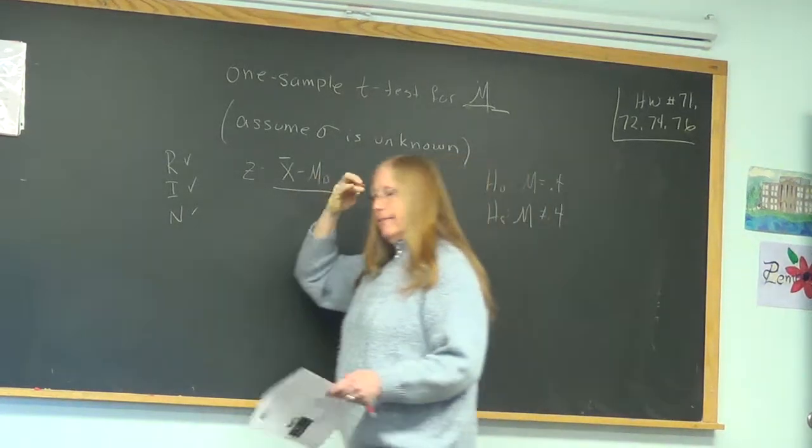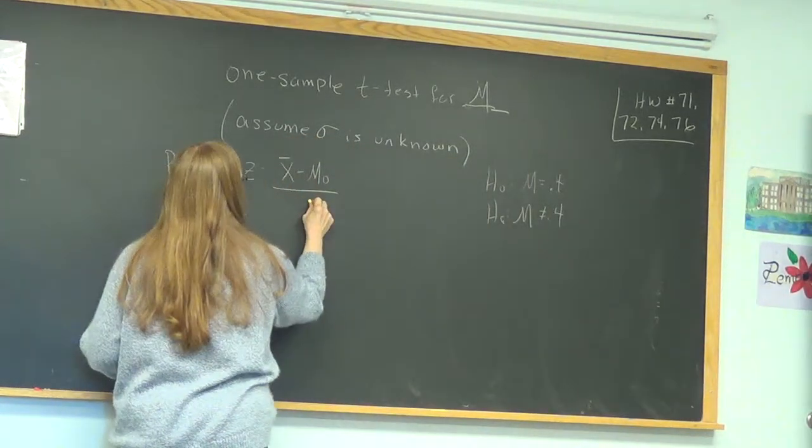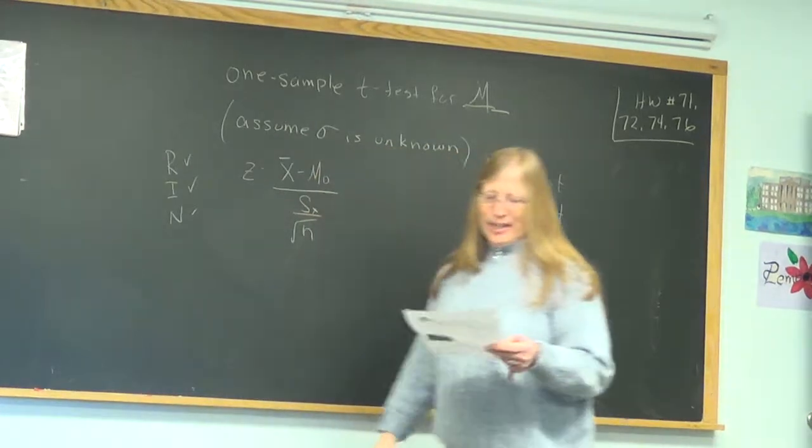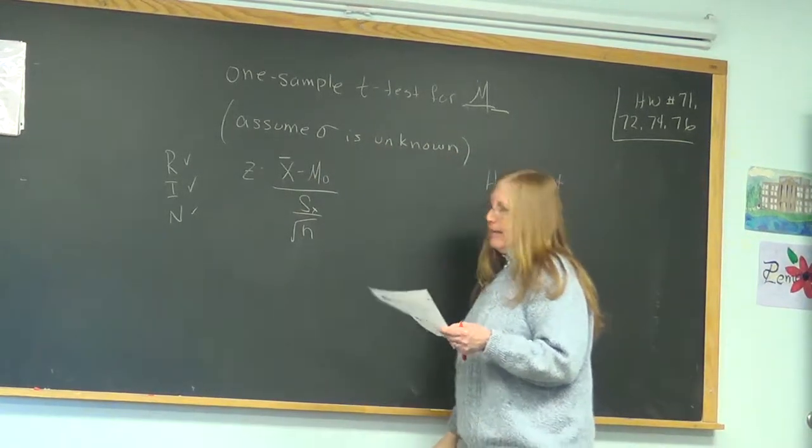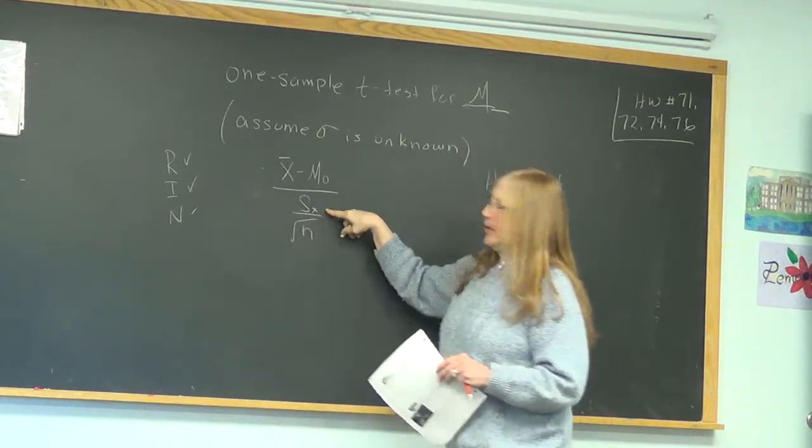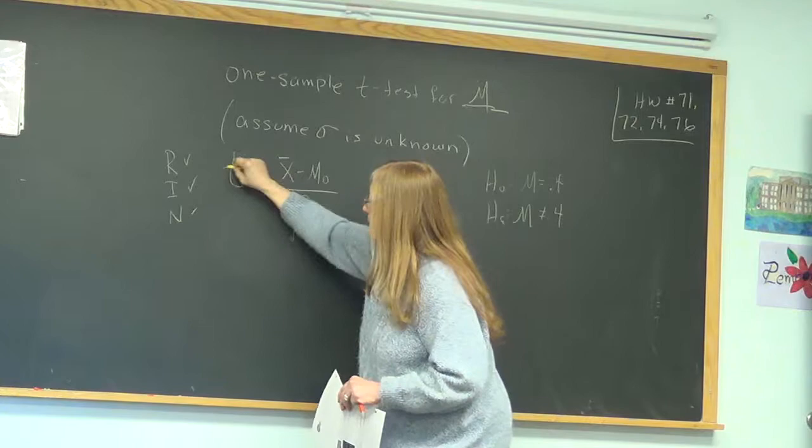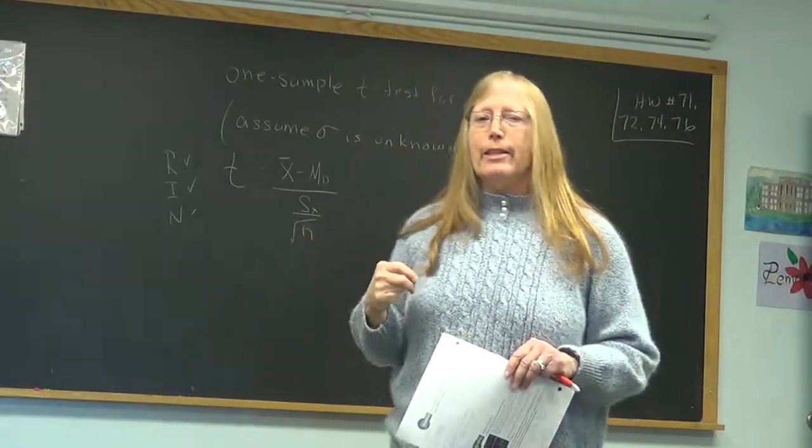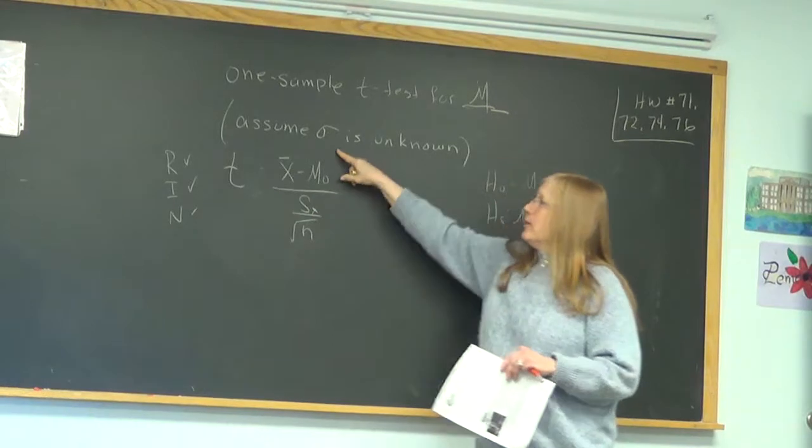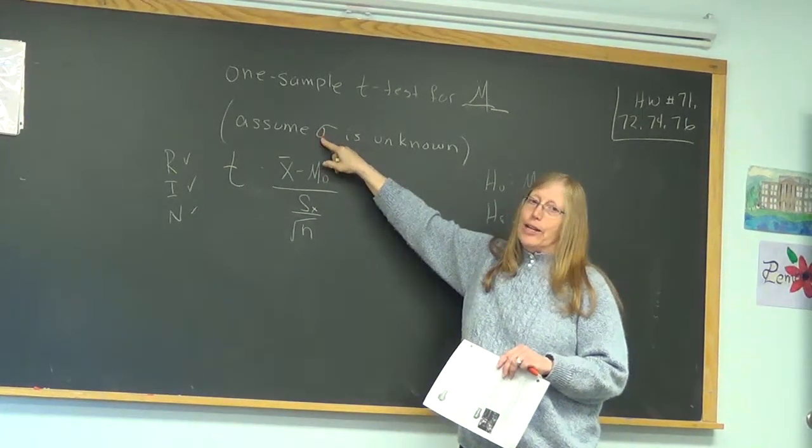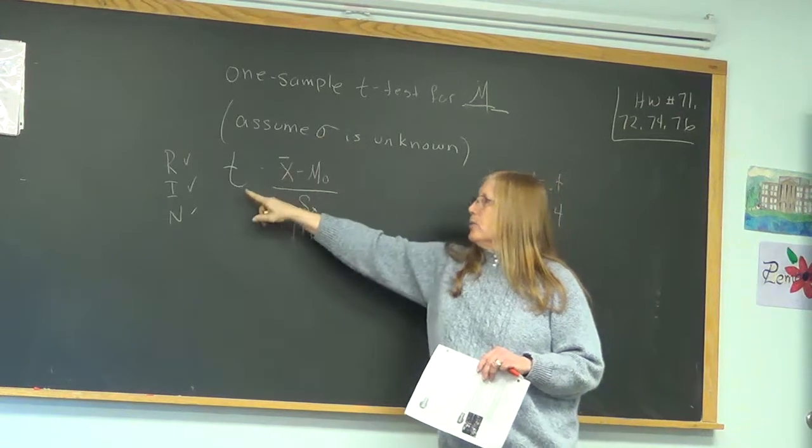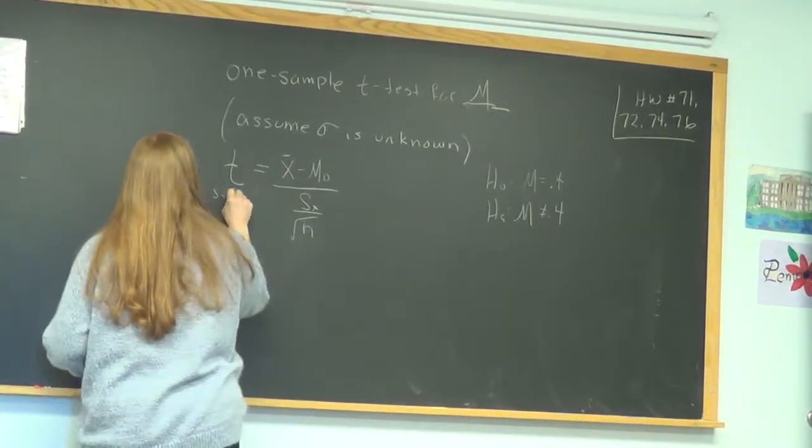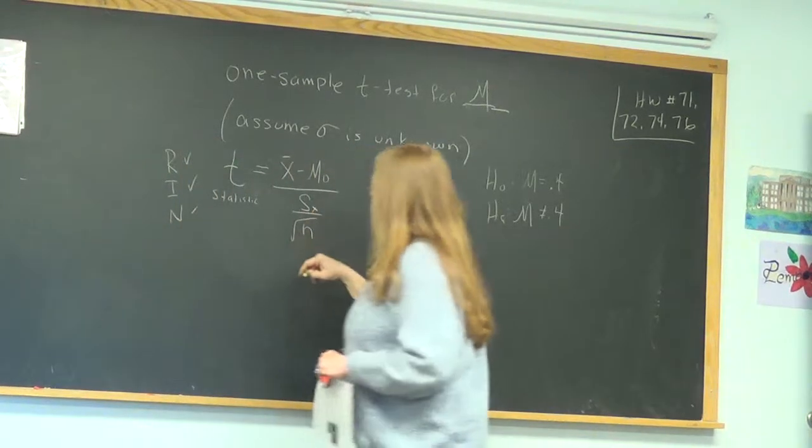What do you think I'm going to put in the denominator? S of X. S of X over the square root of N. So you're going to come up with the value that way. Because this is not a Z value, because we don't know σ. S of X is a t value. So I just wanted you to think of it as a Z for a minute, so you can see we're doing the same thing but with a different chart.